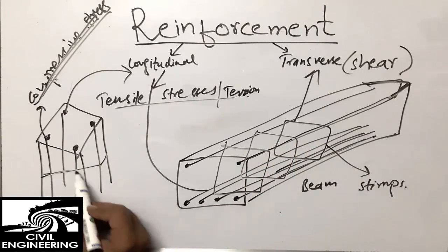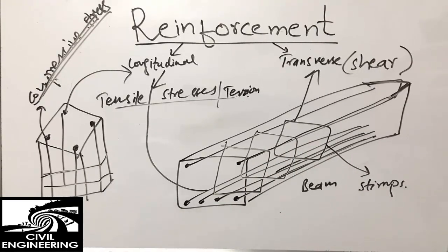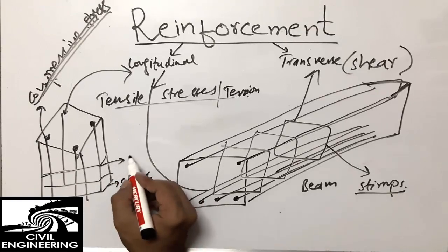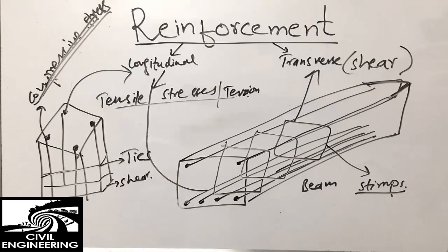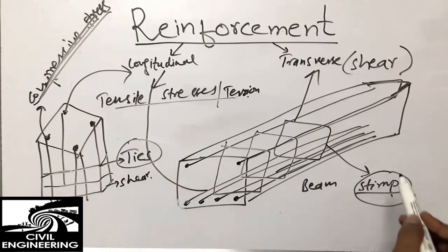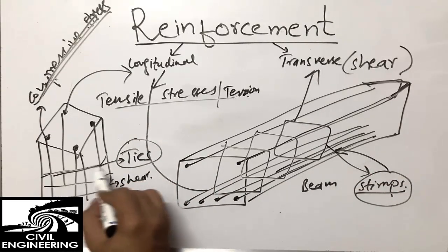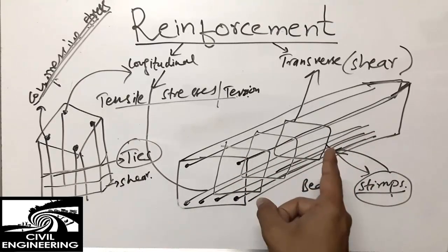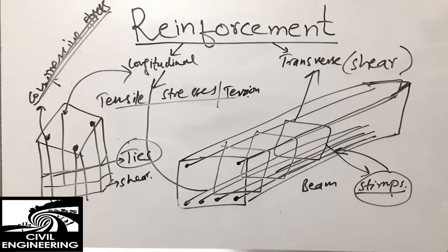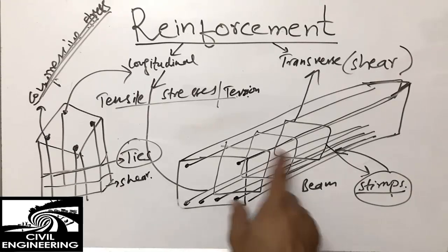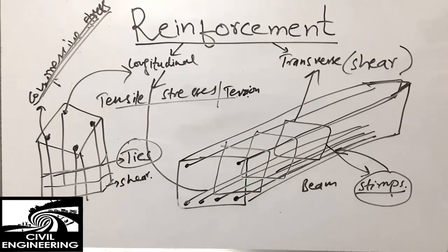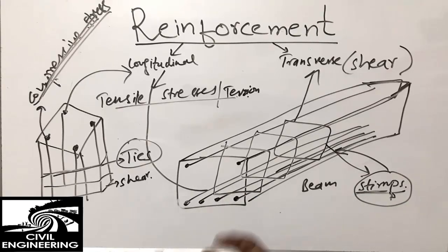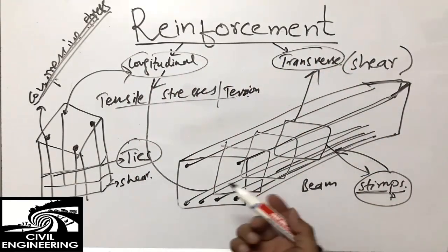In columns, we also have transverse reinforcement used for shear resistance, but in columns we don't call them stirrups — we call them ties. The difference between ties and stirrups is only in name: stirrups are used in beams while ties are used in columns. The function is the same — to resist shearing stresses, prevent shear failure, hold the longitudinal bars in place, and especially during earthquakes, ties and stirrups play a very important role.